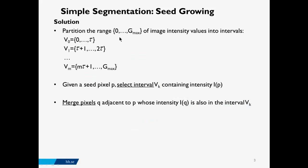There is a solution to this problem. The solution is to partition the range of image intensities into different intervals based on a parameter. Given a seed pixel, we select the interval that contains the intensity of that pixel, and then merge adjacent pixels only if their intensity falls within the same interval as the seed pixel. With this solution, we avoid the seed-dependence problem observed previously.